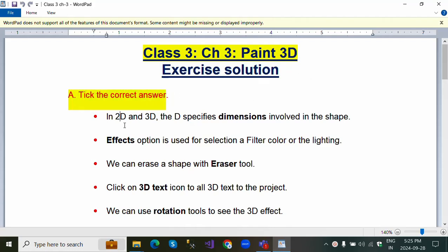The first question is tick the correct answer. In 2D and 3D, the D specifies dimensions involved in the shape. Effects option is used for selection of filter color or the lighting.